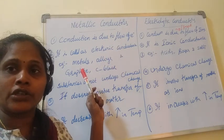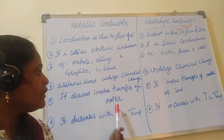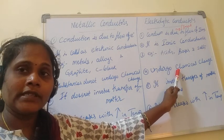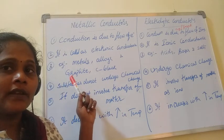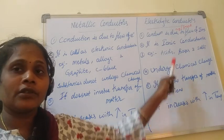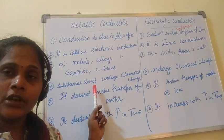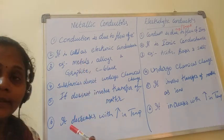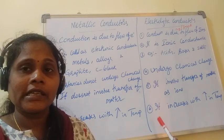In metallic conductors, matter does not undergo chemical change — no atoms or ions are moving, only electrons flow. Whereas in electrolytic conductors, chemical change occurs: in sodium chloride, Na⁺ and Cl⁻ ions are moving — the chemical bonds are breaking. In metallic conductors the metal itself is not changed. Electrolytic conduction involves transfer of matter in the form of ions, so chemical change occurs; but in metallic conduction, no chemical change — only electron flow — so no change in matter.